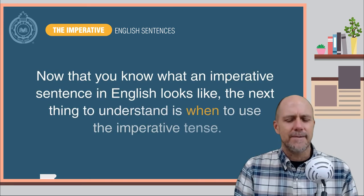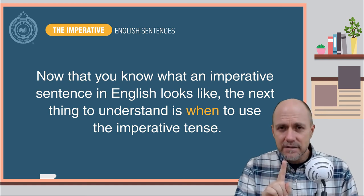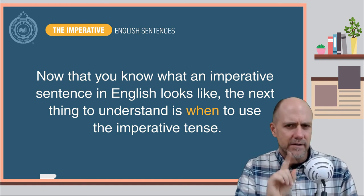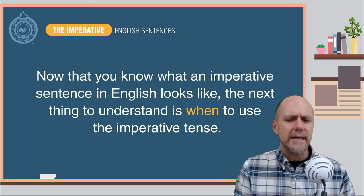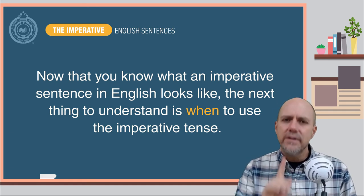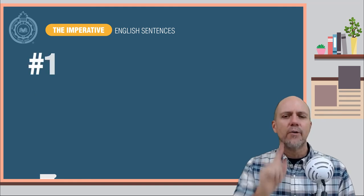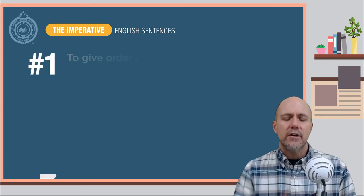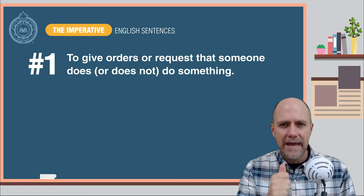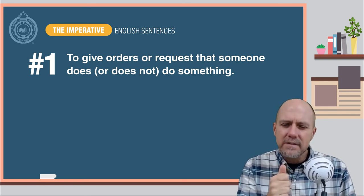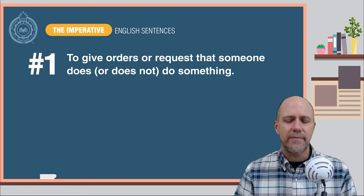Now that you know how to identify the imperative sentence in English, the next thing is to understand when to use the imperative tense. Rule number one: you use the imperative to give orders, or commands, or request that someone does or does not do something.